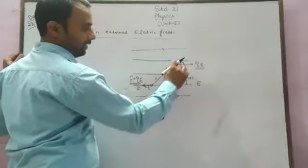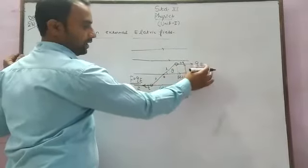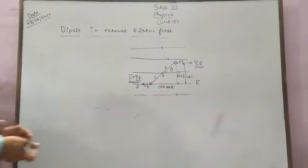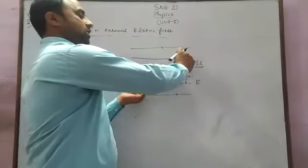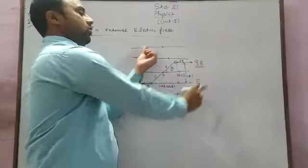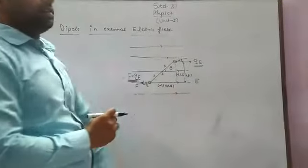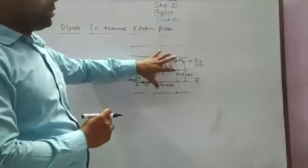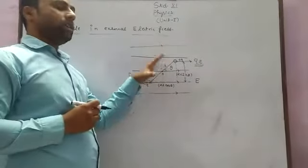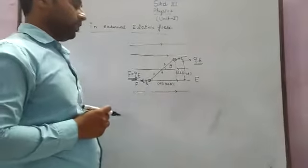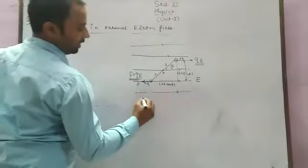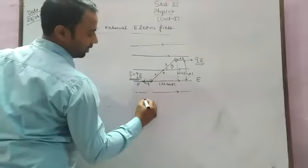As we know very well, the forces QE and QE form a couple. This couple tries to rotate the dipole in the external electric field. Because of this rotating condition, a torque is developed in the electric dipole.